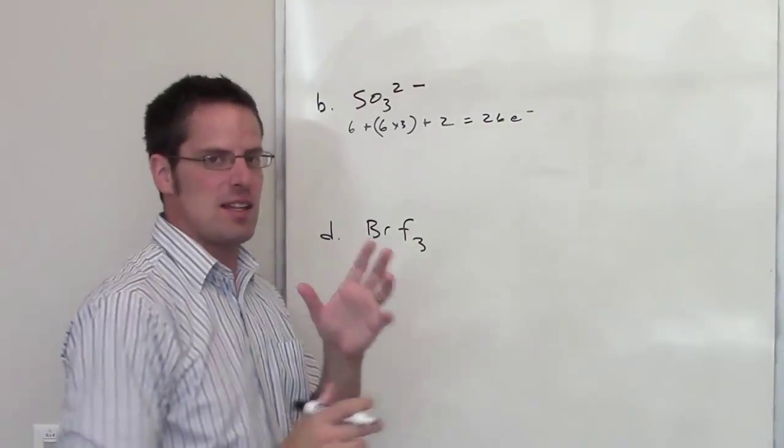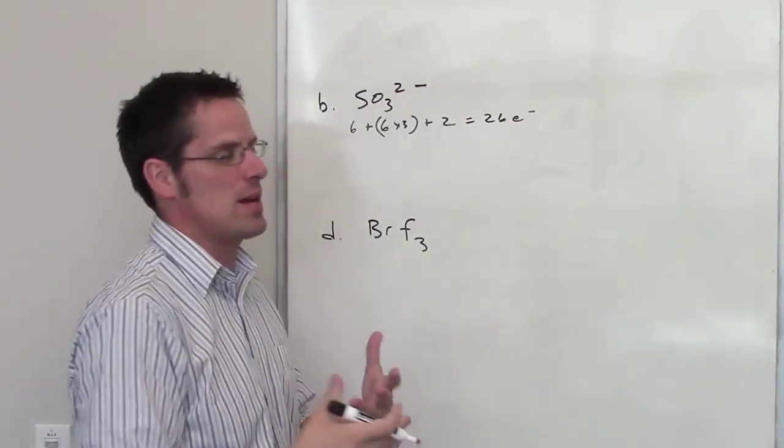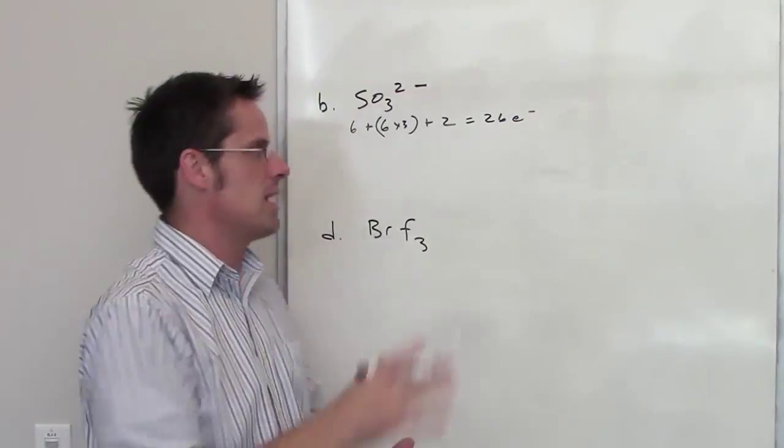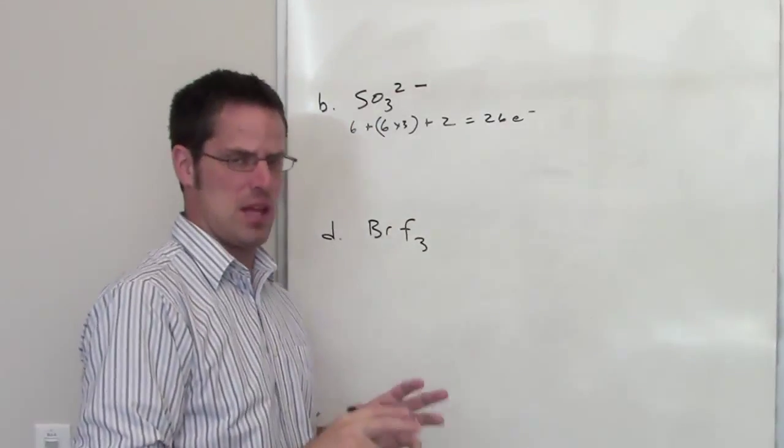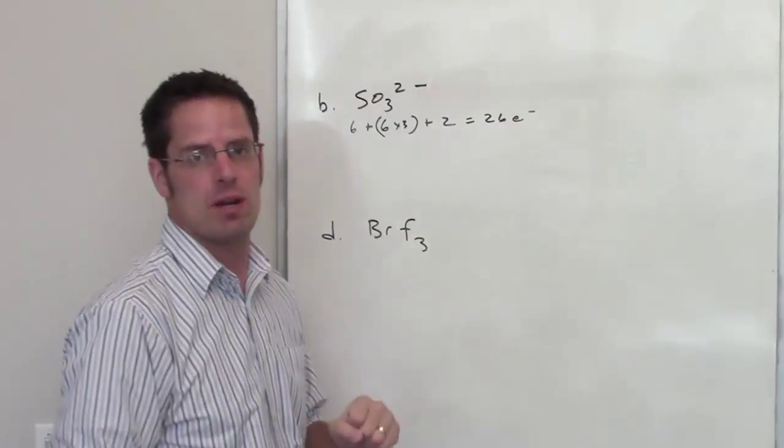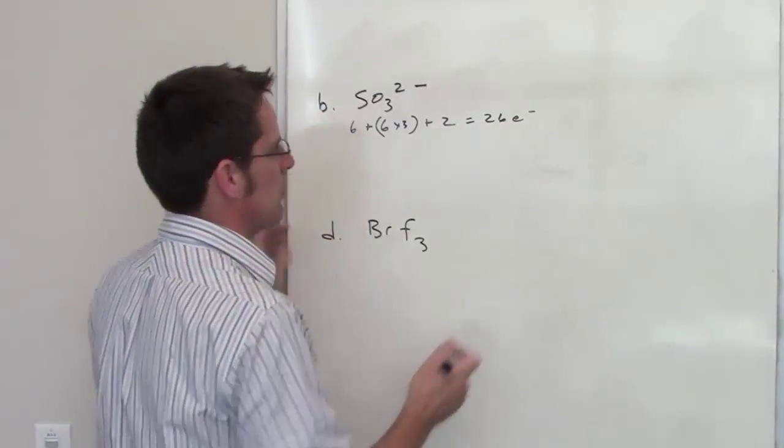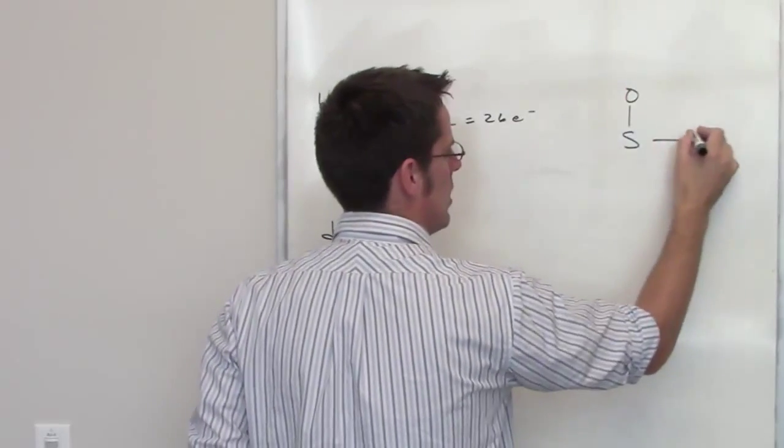Step two is to take the central atom, in this case sulfur. The central atom is almost always the less electronegative atom in the system. It's usually the one that's written to the left in the formula. The major exception is hydrogen, because hydrogen can never be a central atom since it can only have one bond. In this case, we've got sulfur as a central atom, so I'll just take sulfur and draw a single bond out to each of the oxygens.